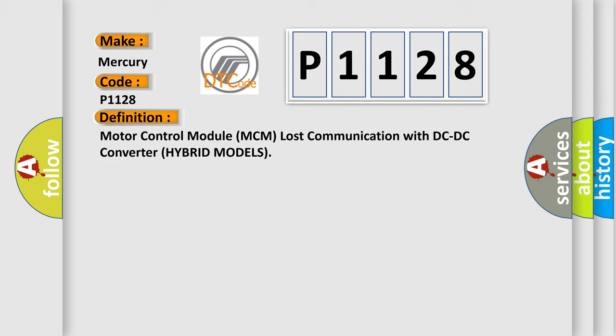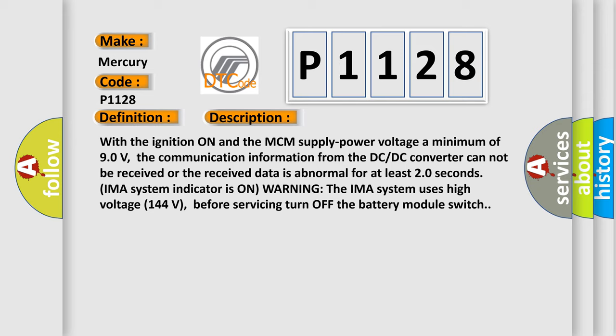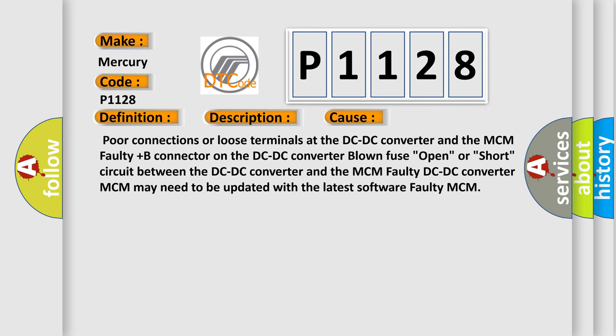The basic definition is: Motor Control Module (MCM) lost communication with DC-DC converter — hybrid models. With the ignition on and the MCM supply power voltage at a minimum of 90 volts, the communication information from the DC-DC converter cannot be received, or the received data is abnormal for at least 20 seconds. Possible causes include a short circuit between the DC-DC converter and the MCM, a faulty plus-B connector on the DC-DC converter, a blown fuse, an open circuit, the DC-DC converter needing a software update, or a faulty MCM.